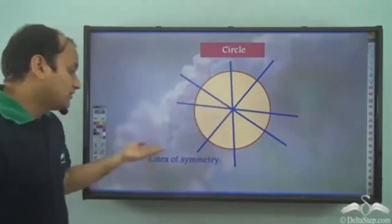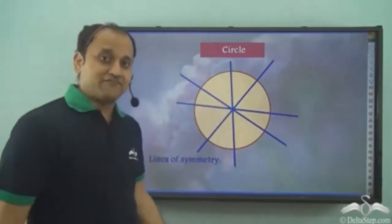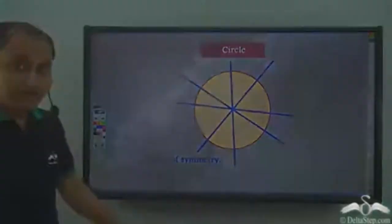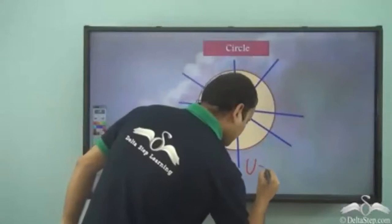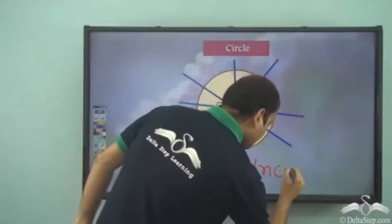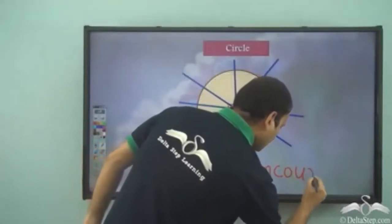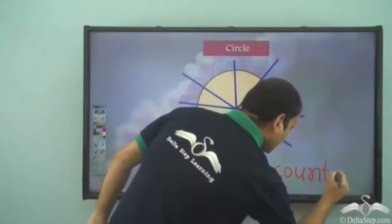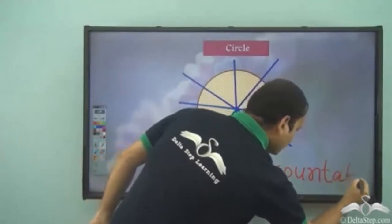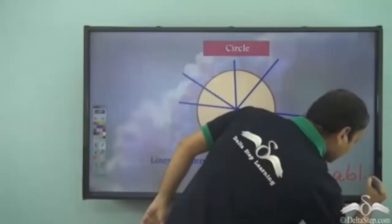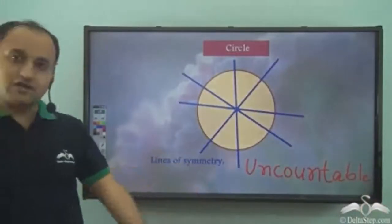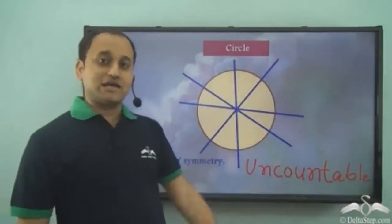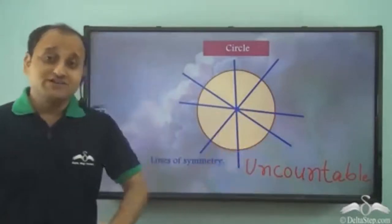There can be an uncountable number of such lines that will give you a line of symmetry in the case of a circle. So how many lines of symmetry do we have in the case of a circle? They are uncountable. In the case of a circle, we have uncountable lines of symmetry.